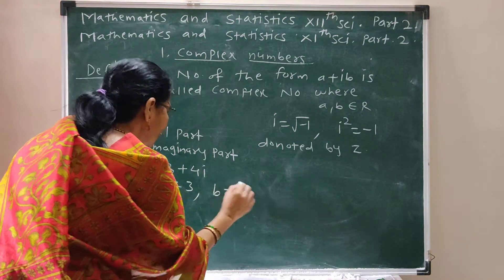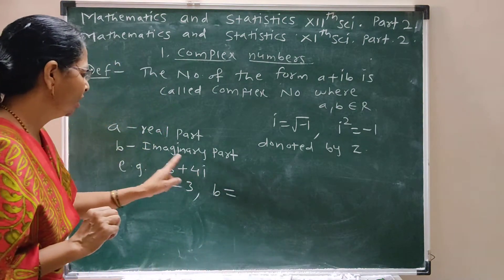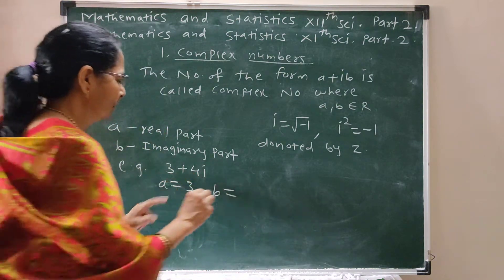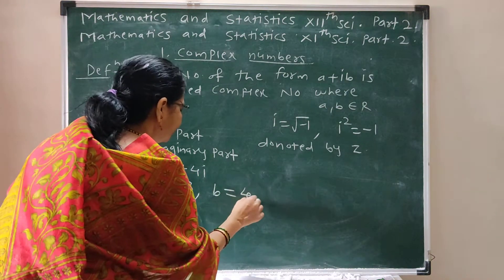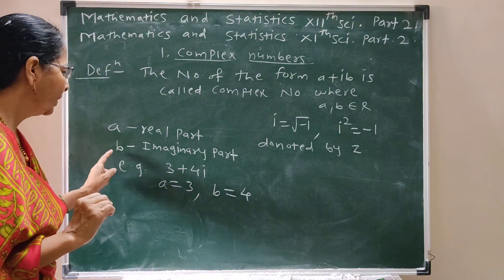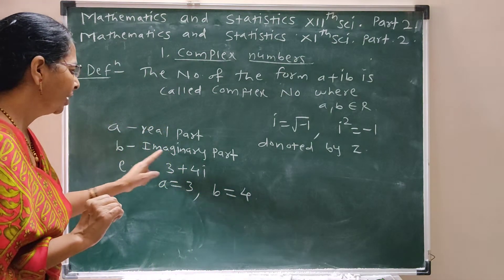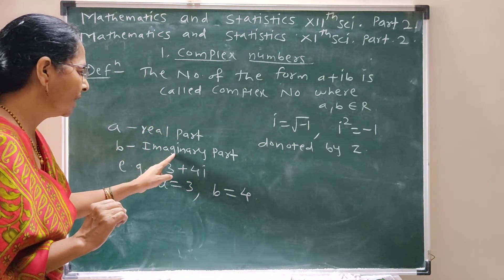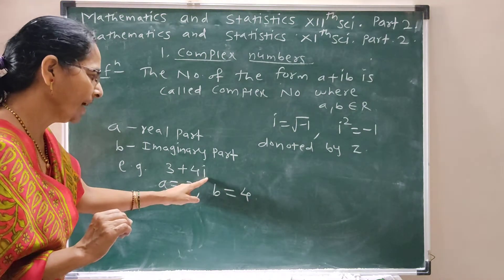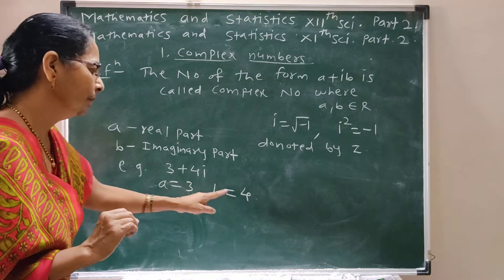B — that is the Imaginary Part, the coefficient of i — is 4.